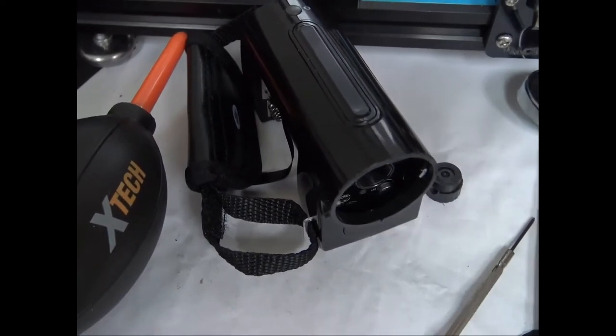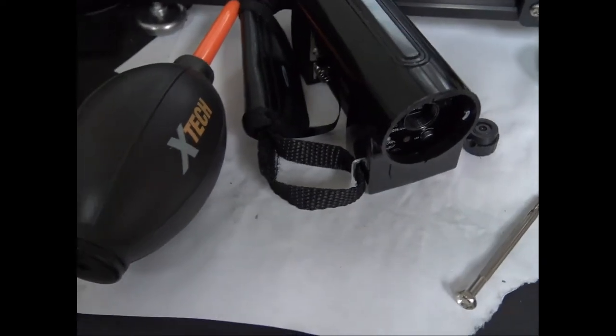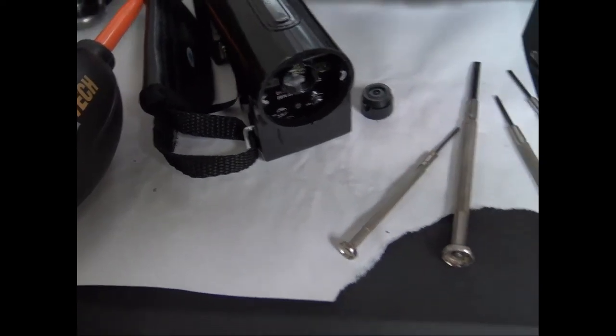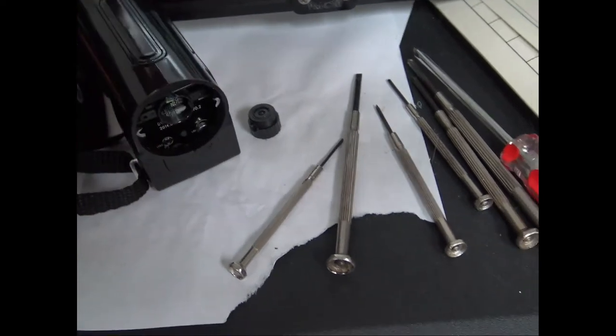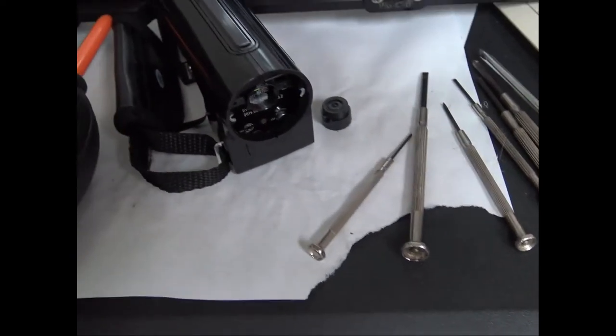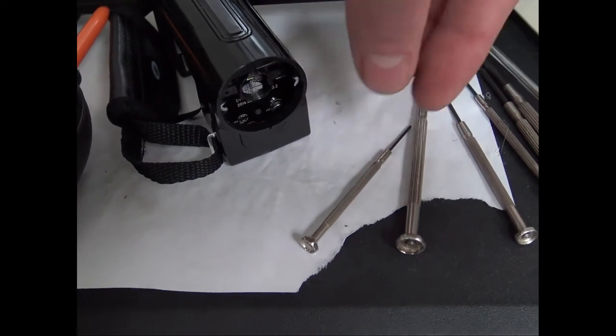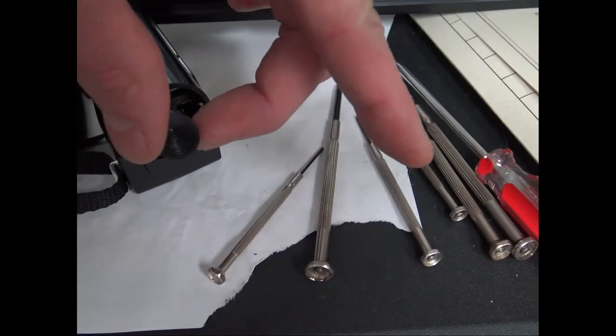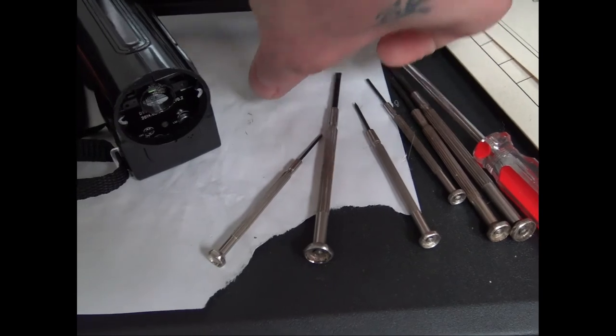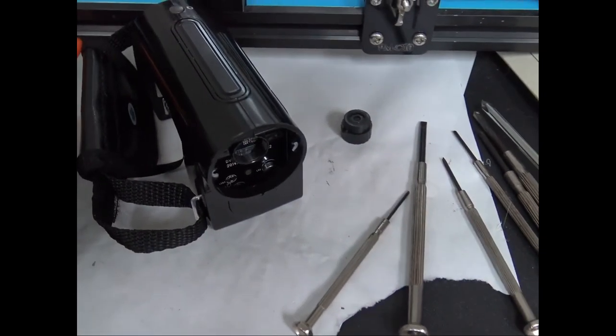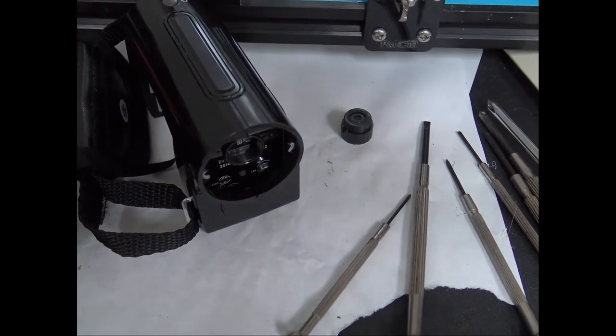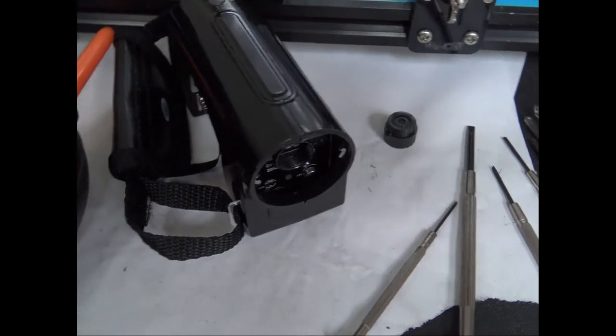These little cheap cameras, they need a lot of light to begin with. Just keep that in mind. Now what I also do: I don't glue this piece back on, I tape it on. Because if you only buy one of these and you want to switch between the difference, what you got to do is pull that tape off.